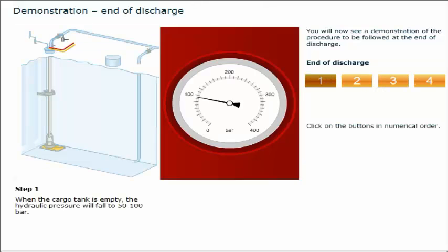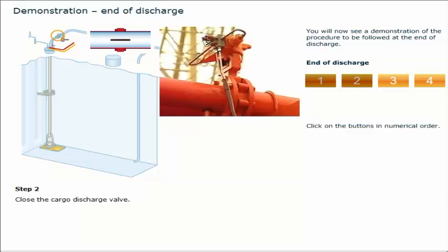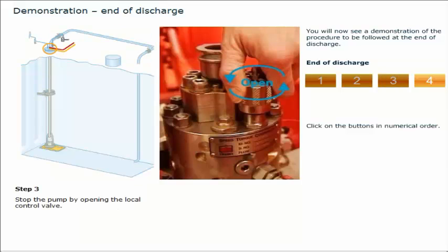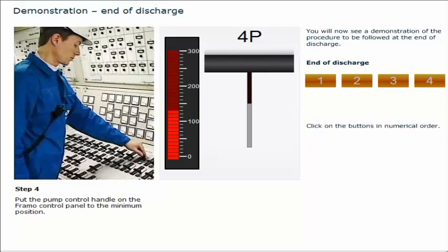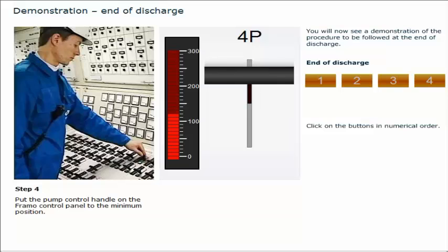When the cargo tank is empty, the hydraulic pressure will fall to 50 to 100 bar. Close the cargo discharge valve. Stop the pump by opening the local control valve. Put the pump control handle on the Framo control panel to the minimum position.